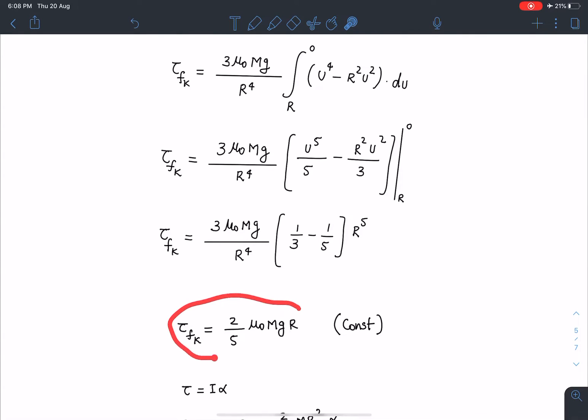When we solve and simplify it, we are going to get this tau fk as 2/5 mu naught mg R, and it turns out to be a constant. The best part is this number 2/5 is also coming, which is related to the solid sphere and its moment of inertia.